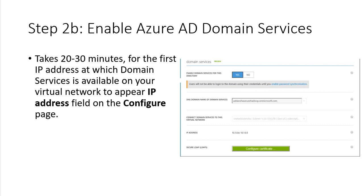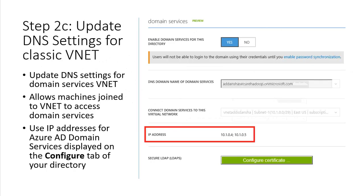Wait for the first IP address to be assigned and available — the network and IP address will appear on the configuration page, so just be patient. Then update the IP address DNS settings for your configuration and update the VNet settings to allow the domain to be joined using the IP address for Azure Domain Services.